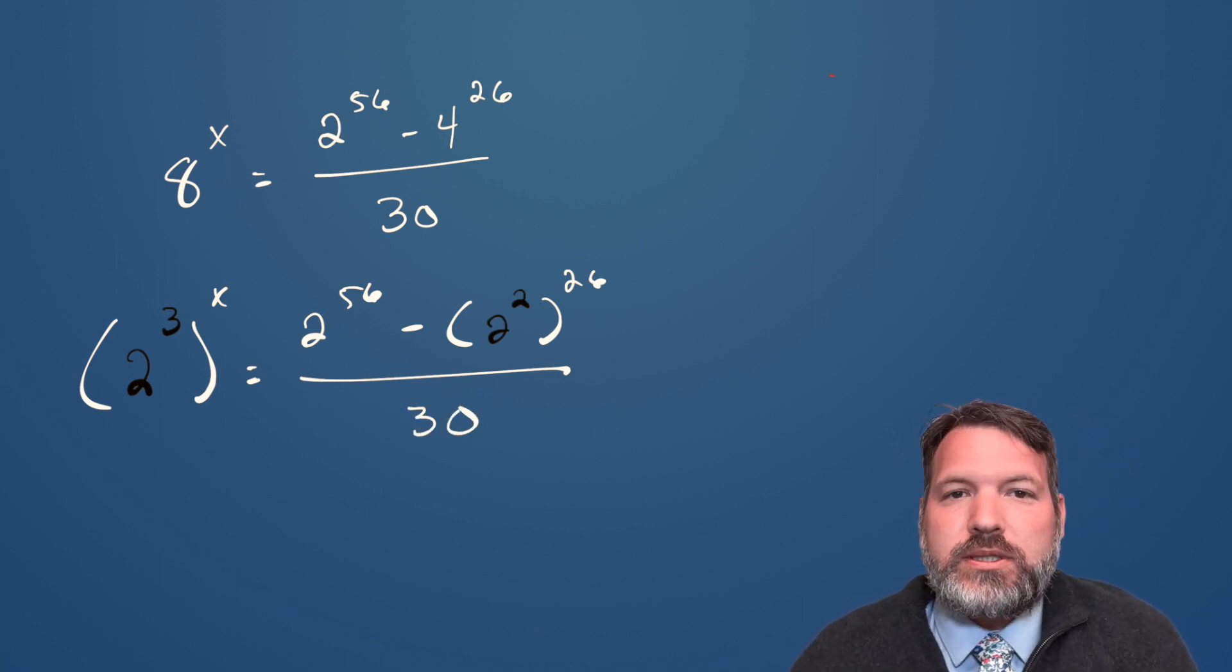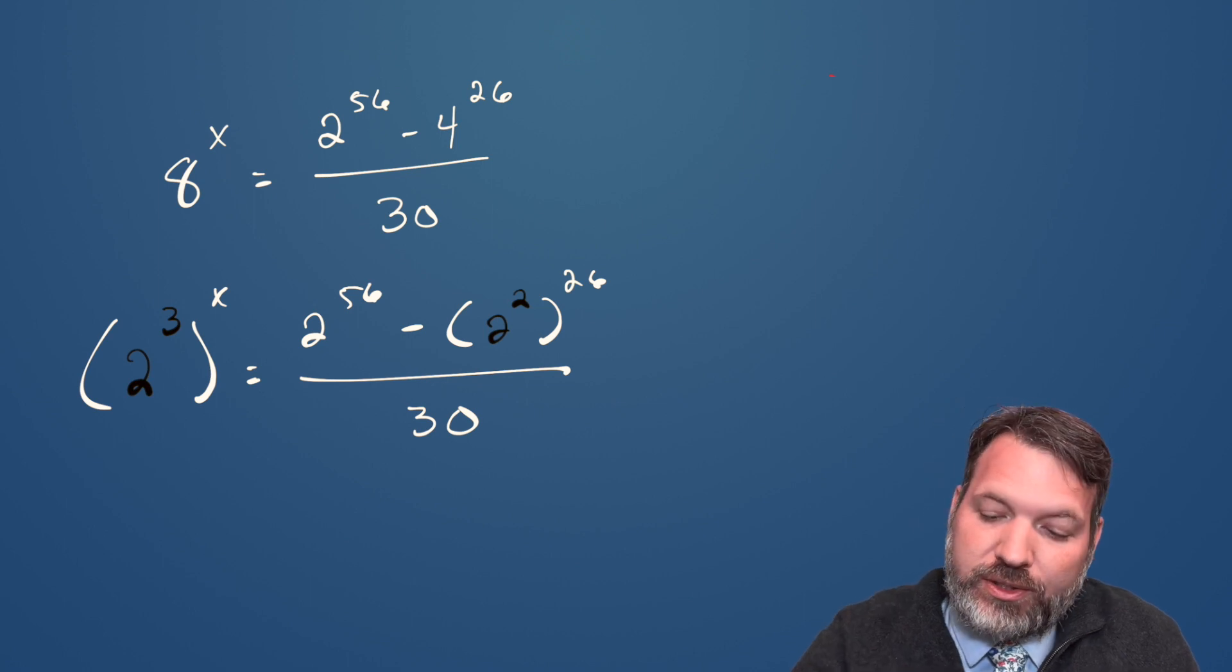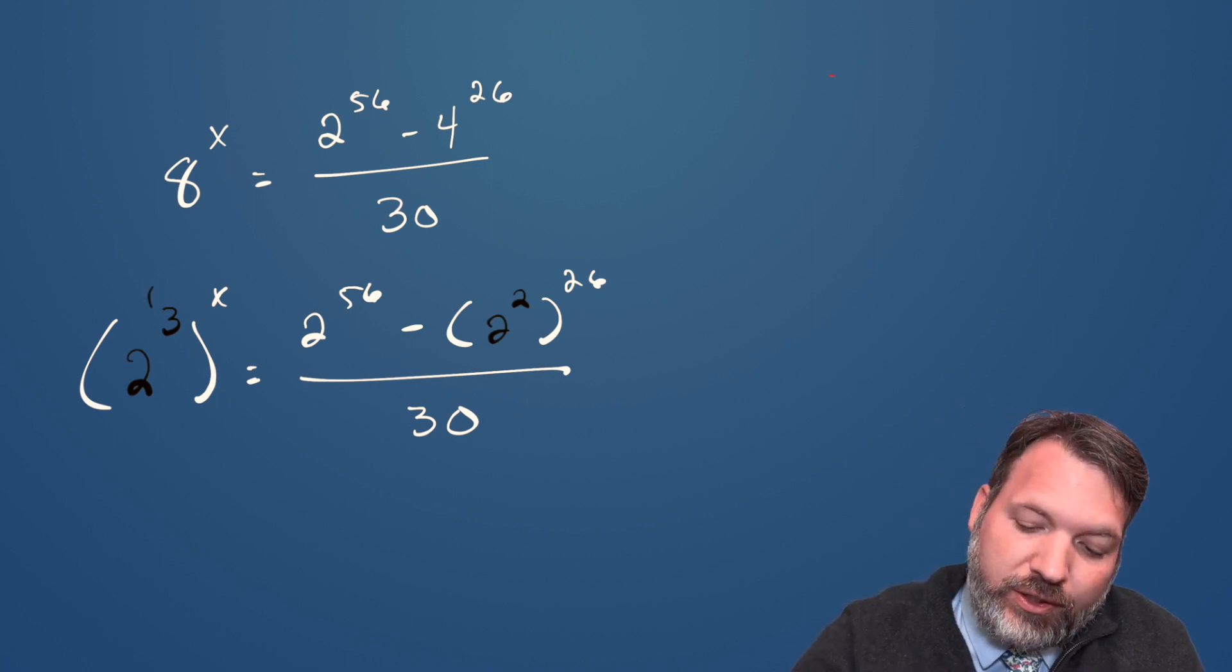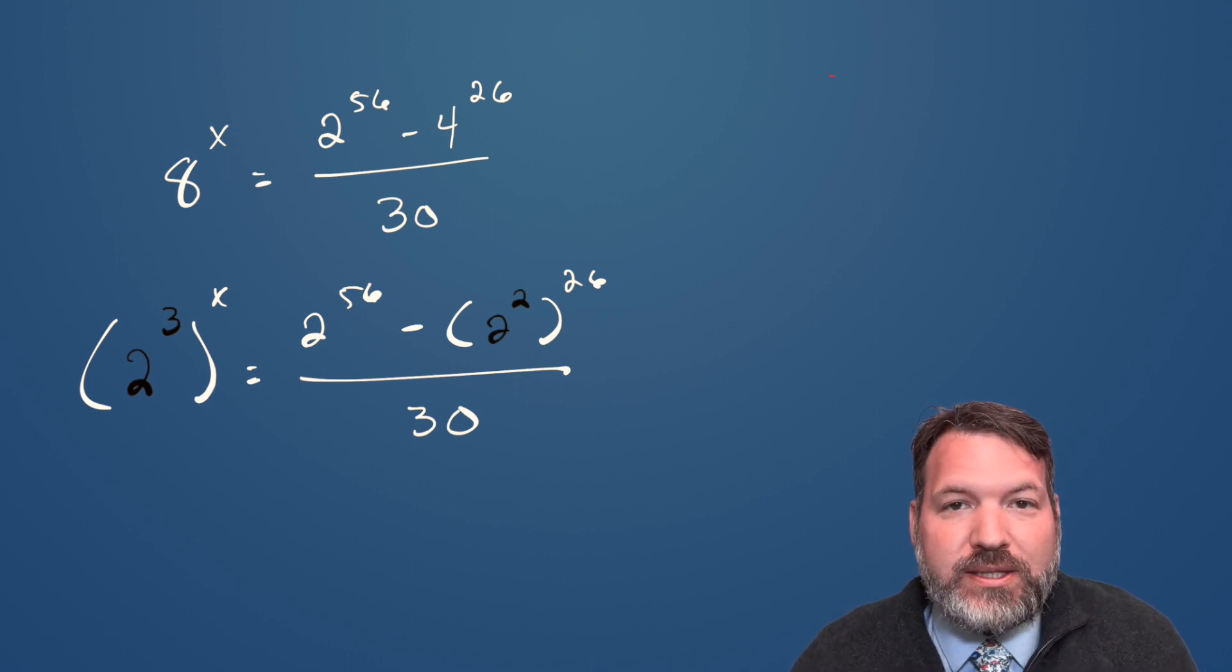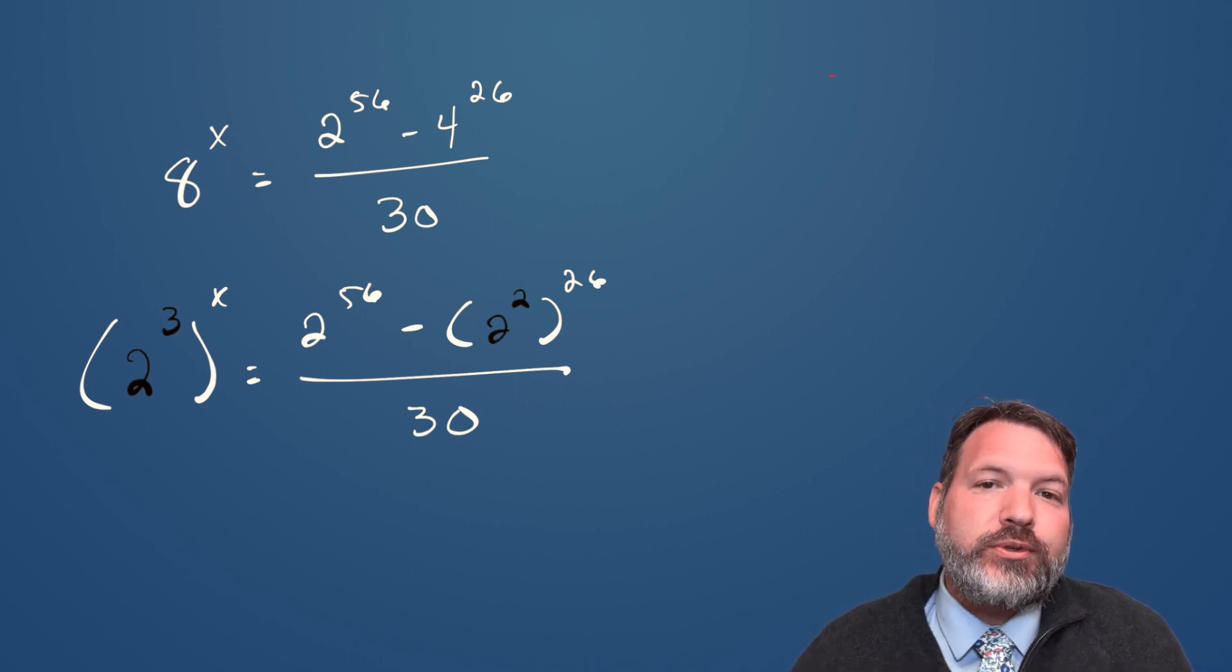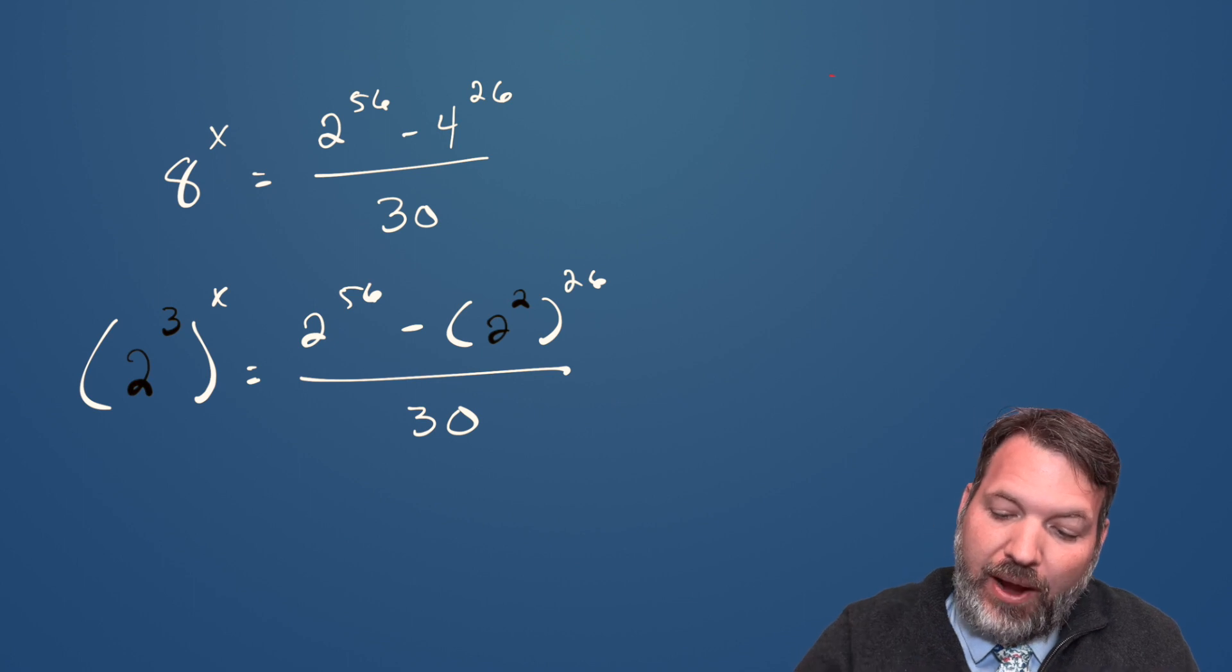Now, like I said, this is a great problem demonstrating that we genuinely understand what's going on with our power rules. For example, when you raise a power to a power, as we have in a couple different places in this expression, your power rules tell you to multiply those powers.